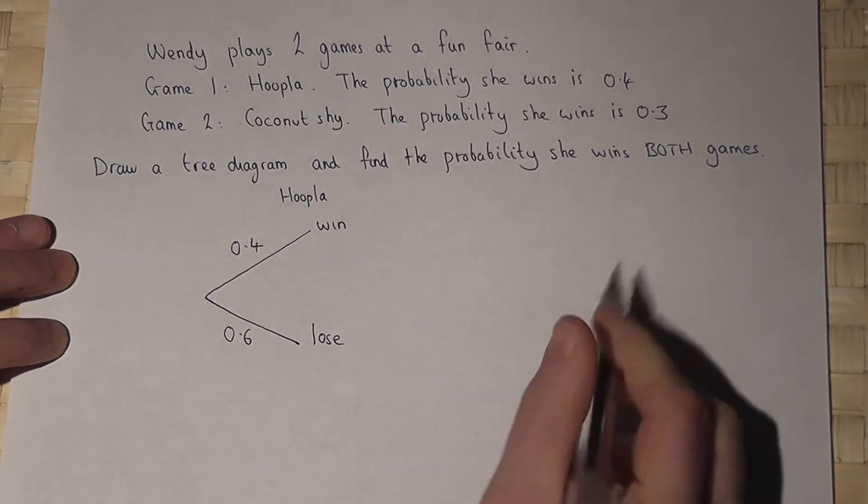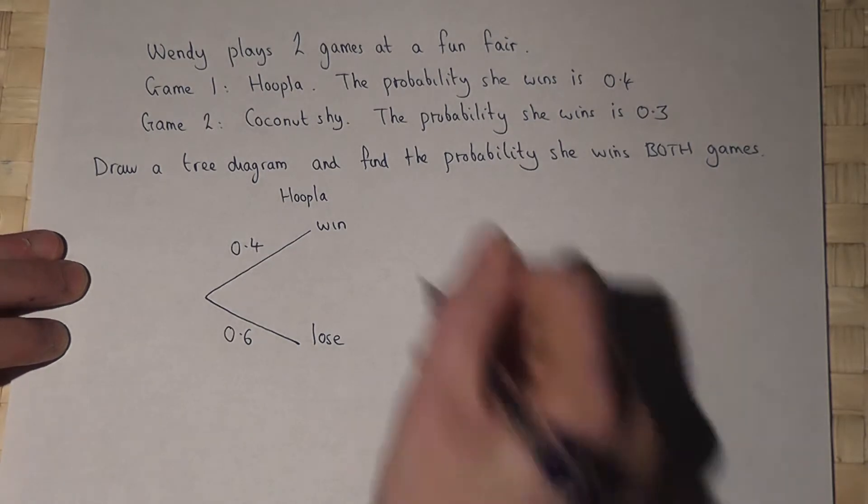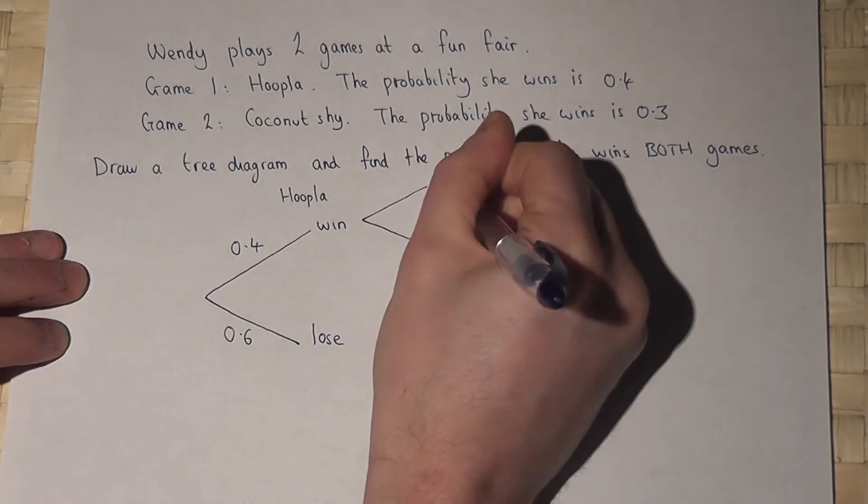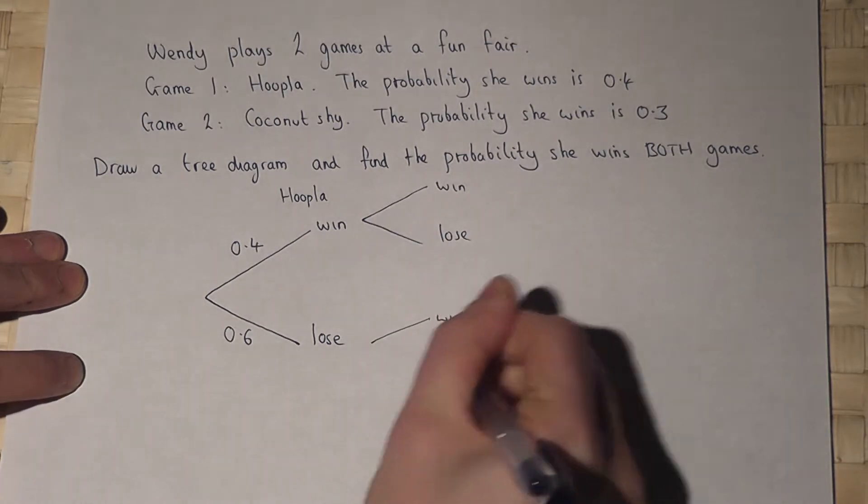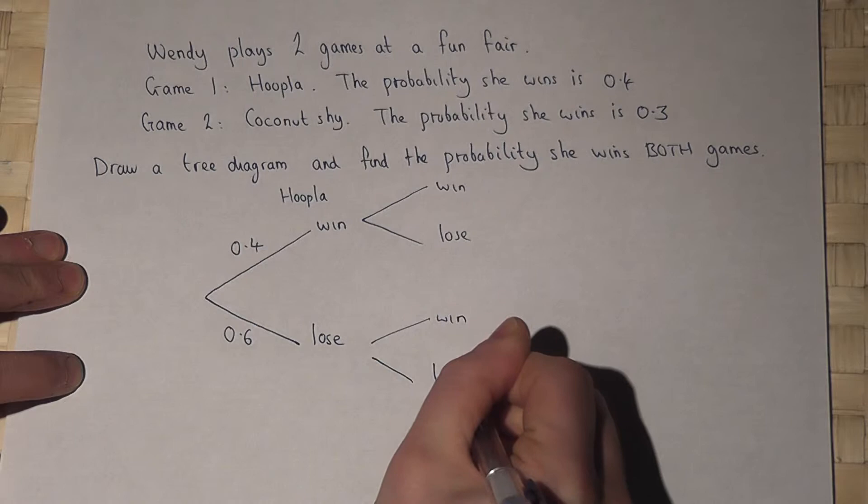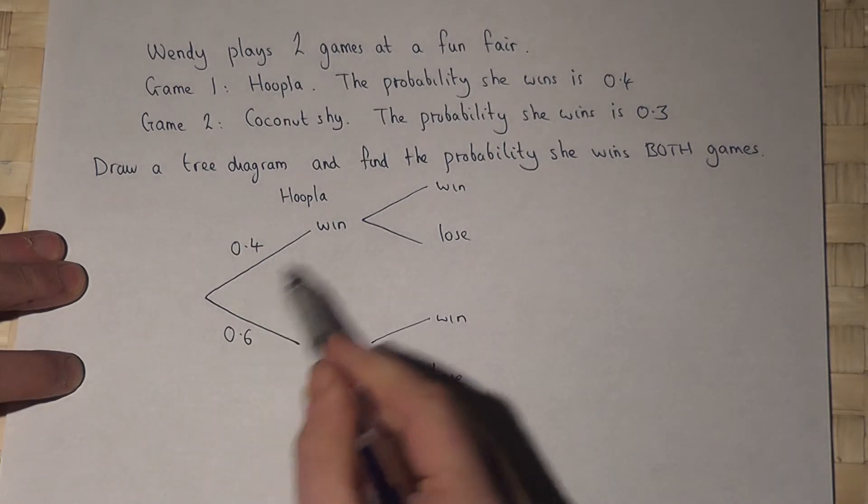She then goes on to play the coconut shy, which she can either win or lose. Win or lose. So this represents all the combinations.